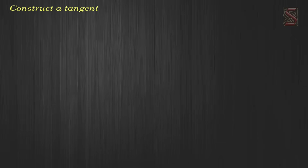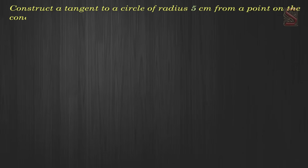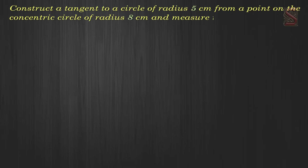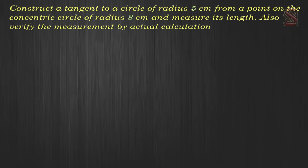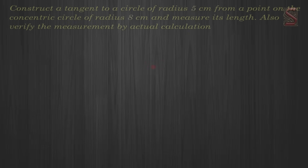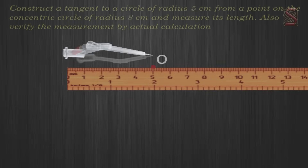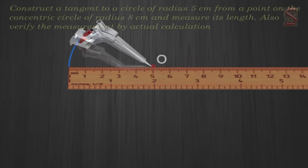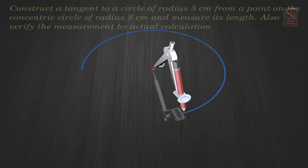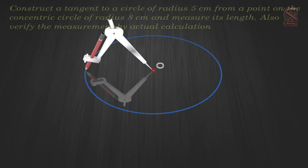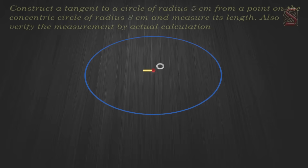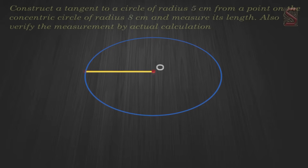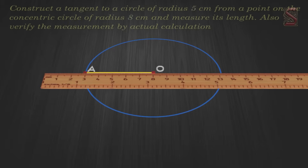Construct a tangent to a circle of radius 5 cm from a point on the concentric circle of radius 8 cm, and measure its length. Also verify the measurement by actual calculation. Solution: Step 1: Take a point O on the plane of the paper and draw a circle of radius OA equal to 5 cm.